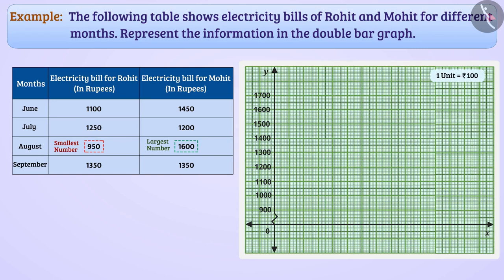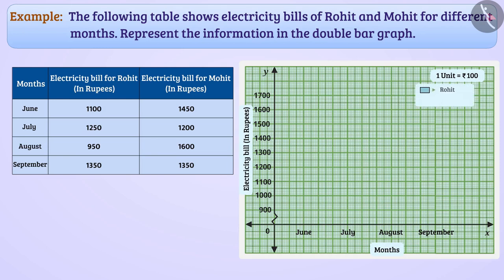Similarly, we can also take this scale as 1 unit is equal to 200 rupees. Let us take 1 unit is equal to 100 rupees scale and show the electricity bill on the y-axis in rupees. Similarly, months will be indicated on the x-axis. We will draw this type of bars for Rohit and this type of bars for Mohit.